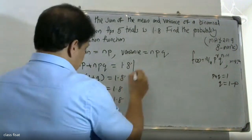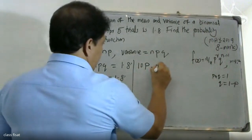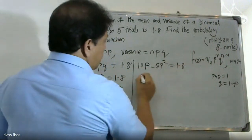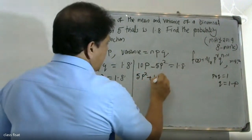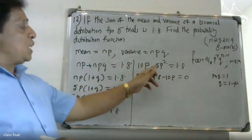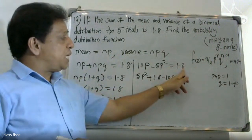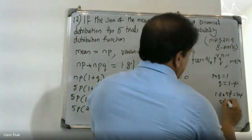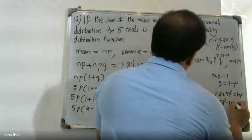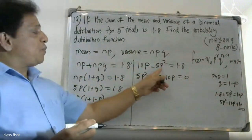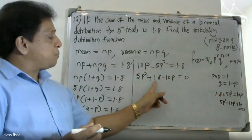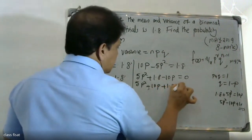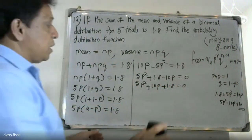Substituting n = 5, we get 5p(1 + q) = 1.8. Since q = 1 - p, we expand: 5p - 5p² = 1.8. Rearranging gives 5p² - 10p + 1.8 = 0. Shifting terms: 10p minus 5p² equals 1.8, and 5p² minus 10p plus 1.8 equals zero.